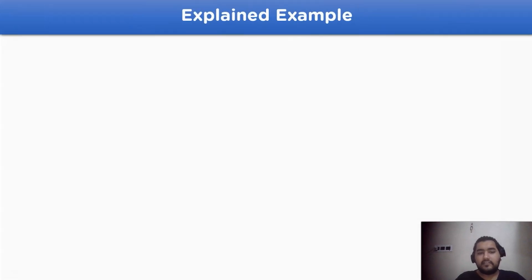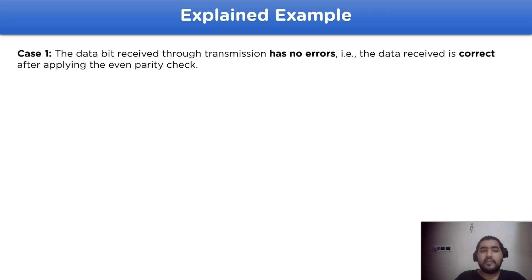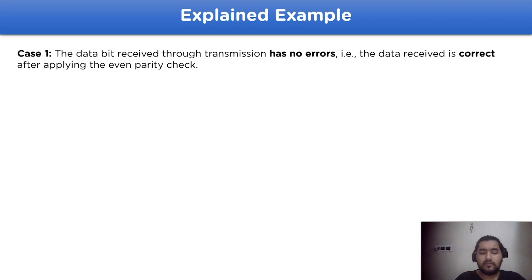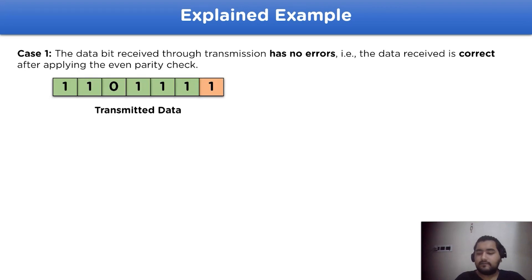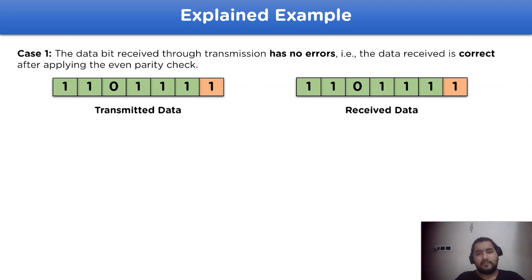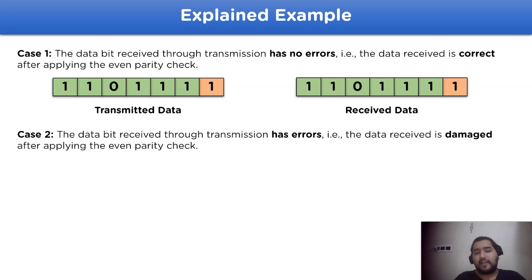After the data has reached the receiver side, there are a few cases that may arise. Case one: the data bit received through transmission has no errors, meaning the data received is correct. After applying the parity bit check, which in this case is even, the transmitted data and the received data are the same, confirming the received data is correct.